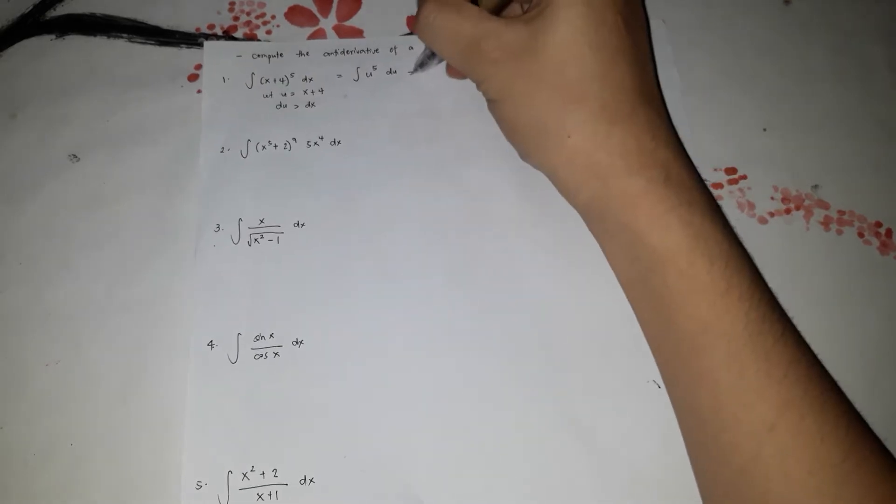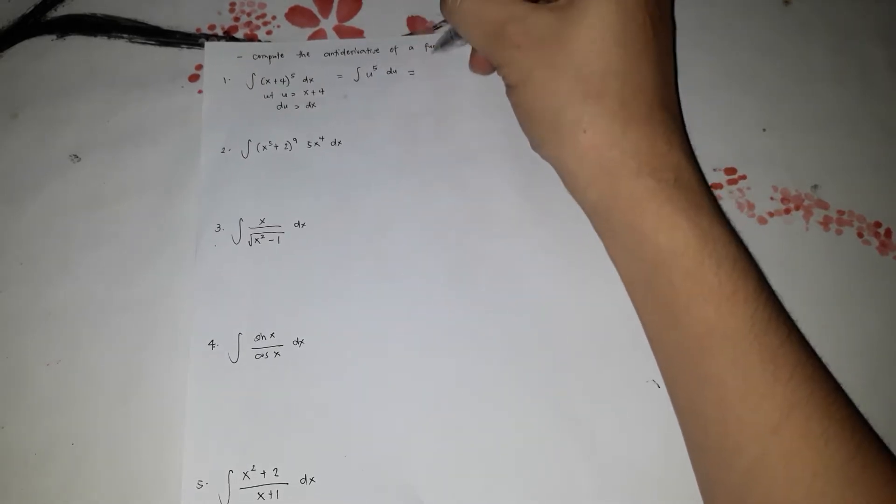Now find the antiderivative. u to the 5 gives u to the 5 plus 1 over 5 plus 1, which is u to the 6 over 6, plus C. Then substitute u back with x plus 4, so the answer becomes x plus 4 raised to the power of 6, over 6, plus C. That's how you apply the substitution rule.